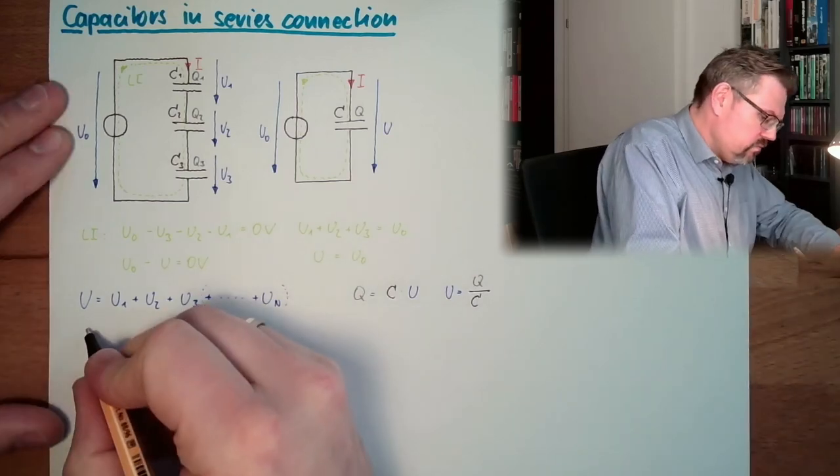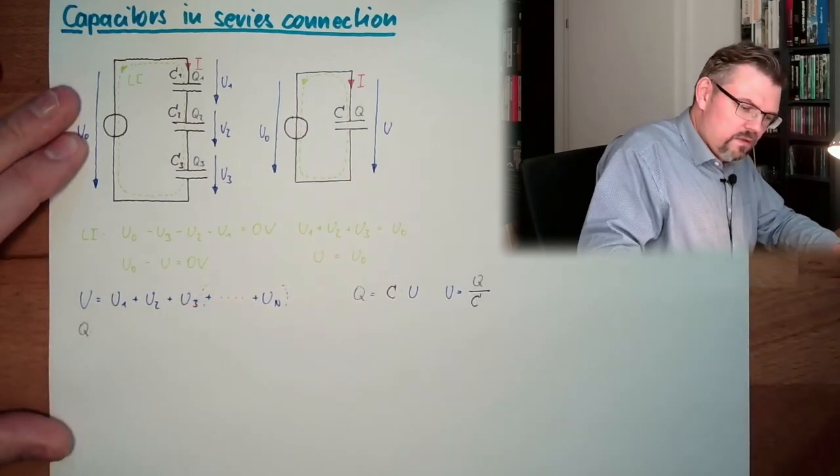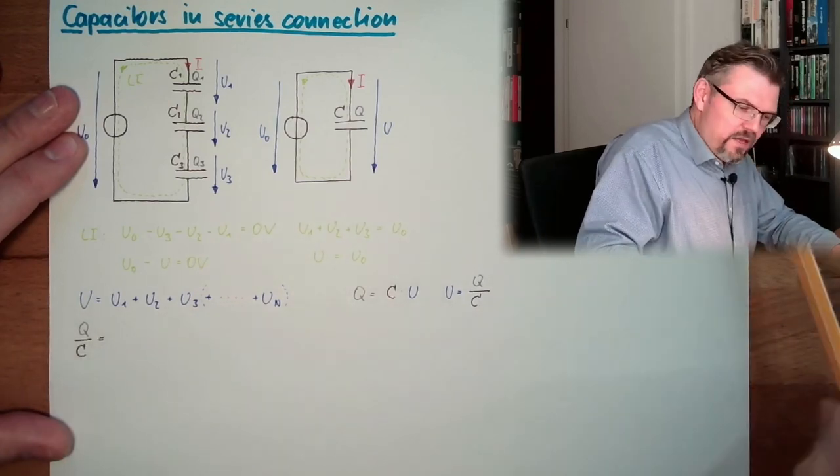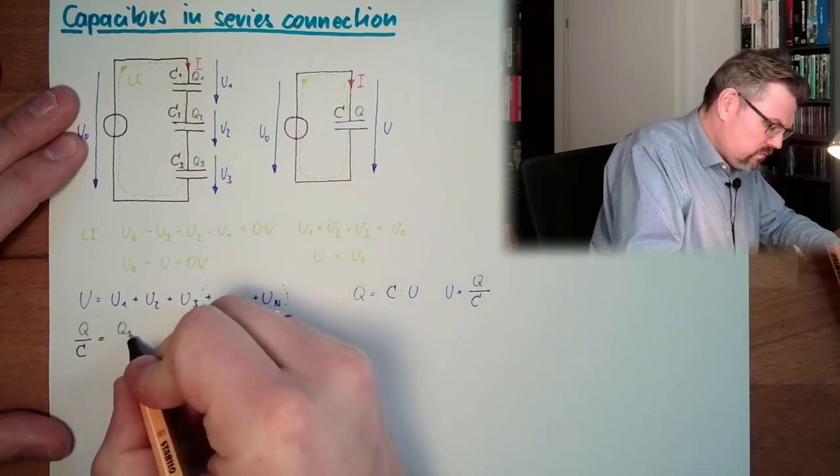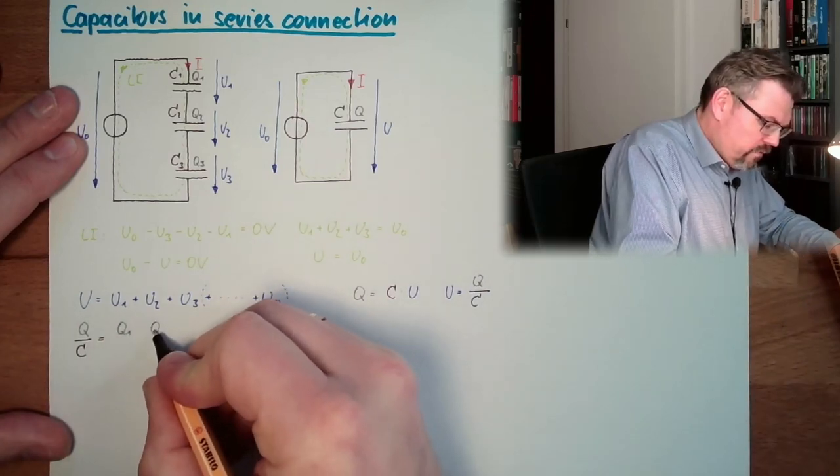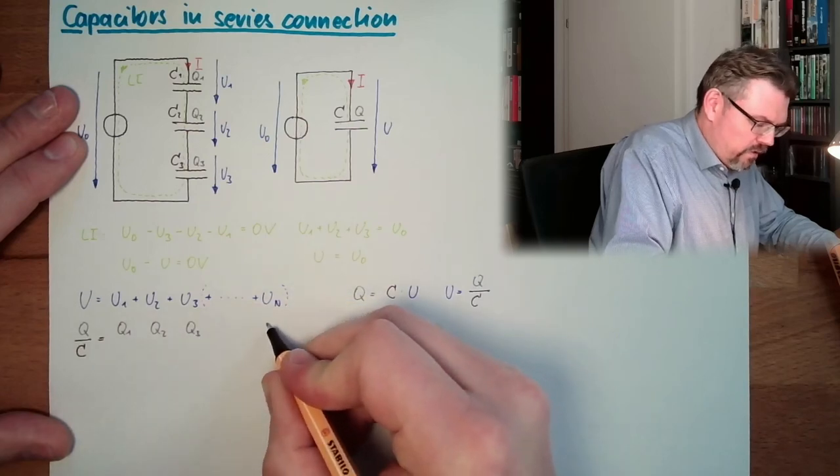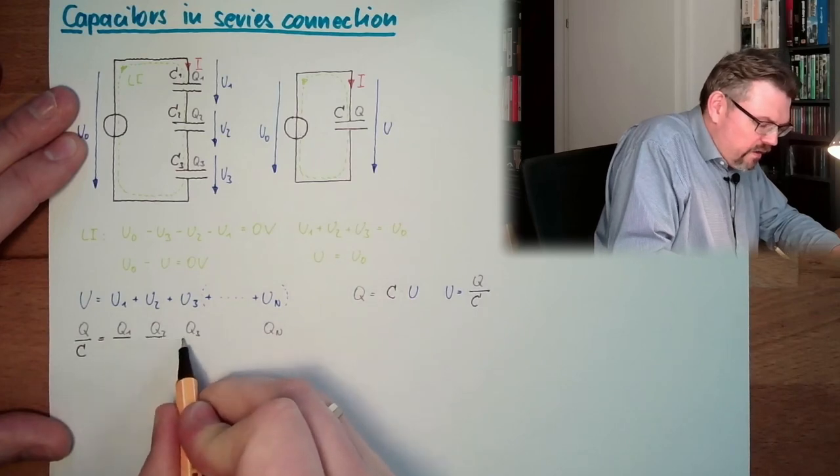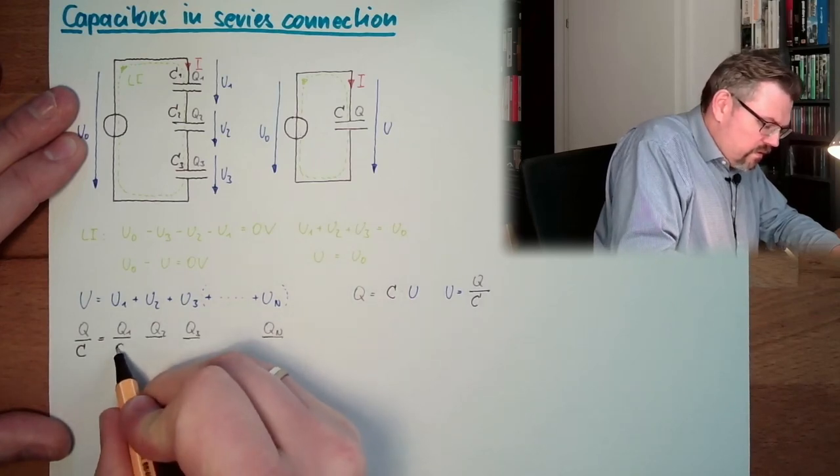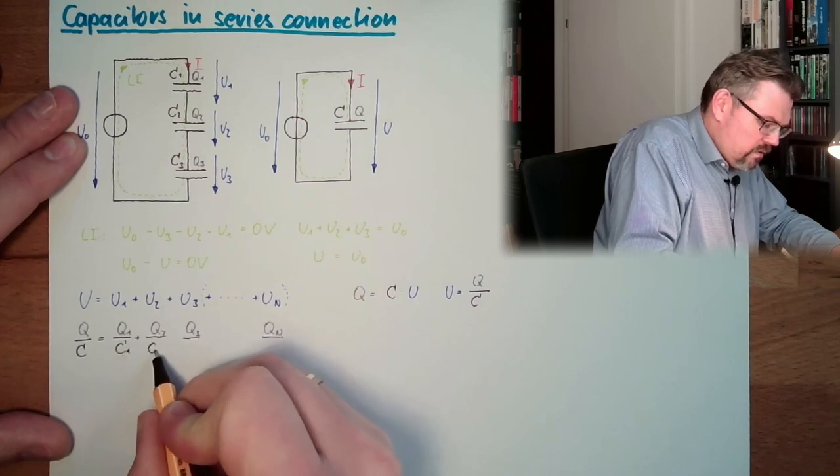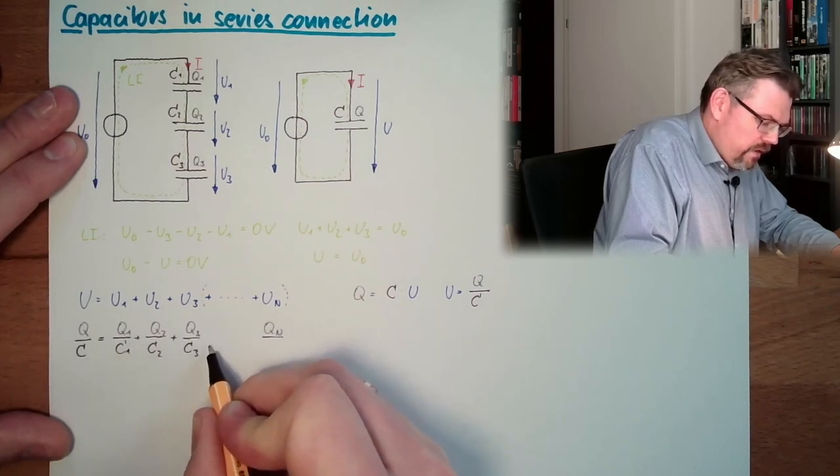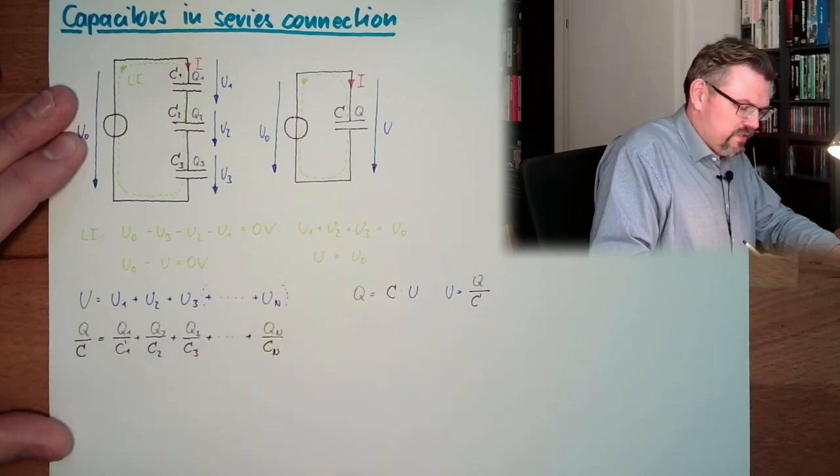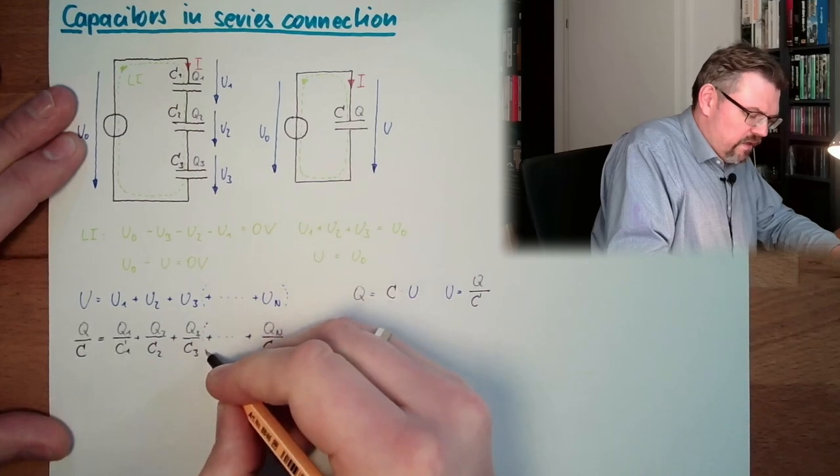Now I'm going to write this here. So we have here q divided by c. That's u. And of course, here we have q1 divided by c1, q2 divided by c2, q3 divided by c3, and so on, qn divided by cn. And here this is again the extension.